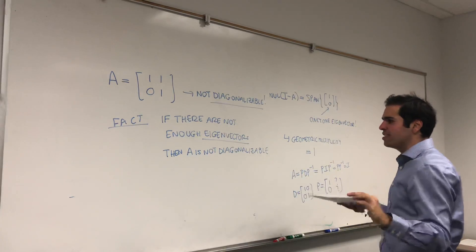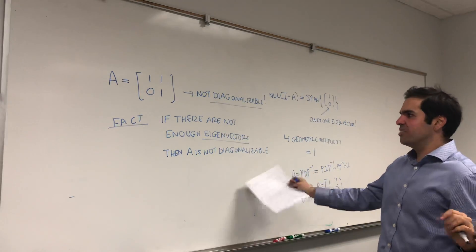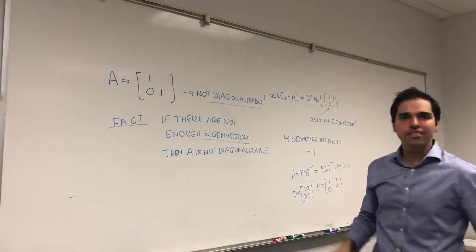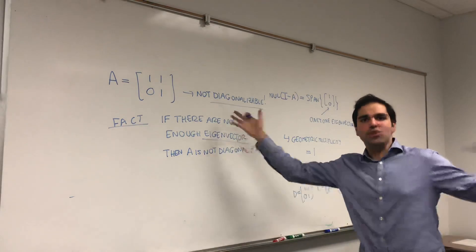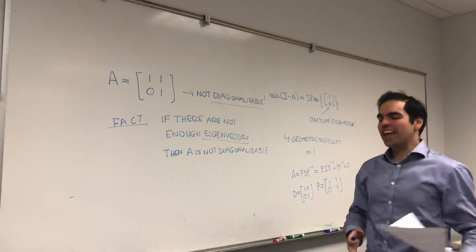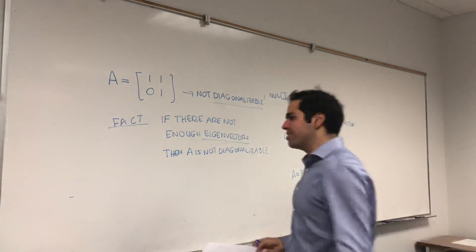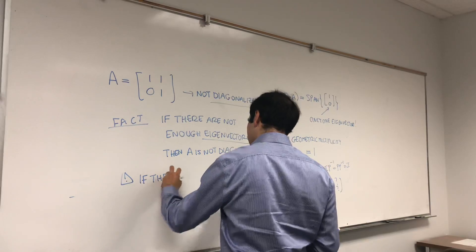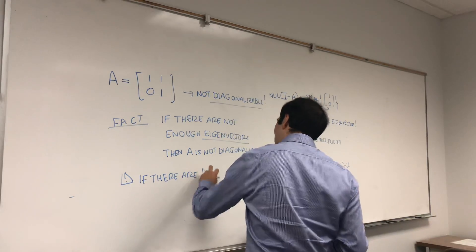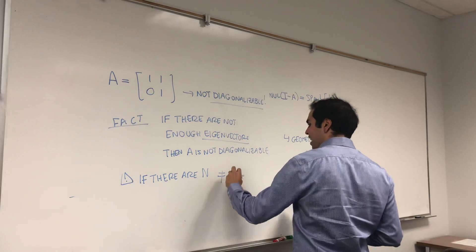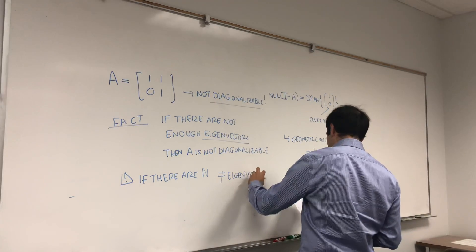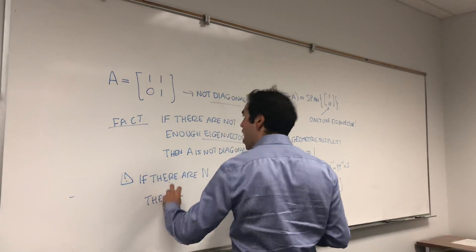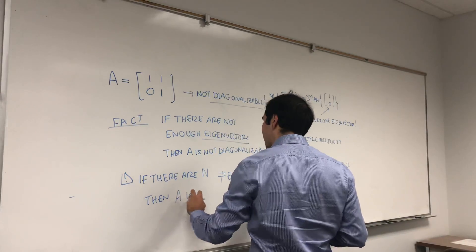And in fact, it's sort of an if-and-only-if statement. A is diagonalizable if and only if there are enough eigenvectors. So here, for a two-by-two matrix, if you find basically two linearly independent eigenvectors, then you're done. And in particular, there's a nice special case. If there are N different eigenvalues, then it is diagonalizable. And N is just the size of A, so A is diagonalizable.